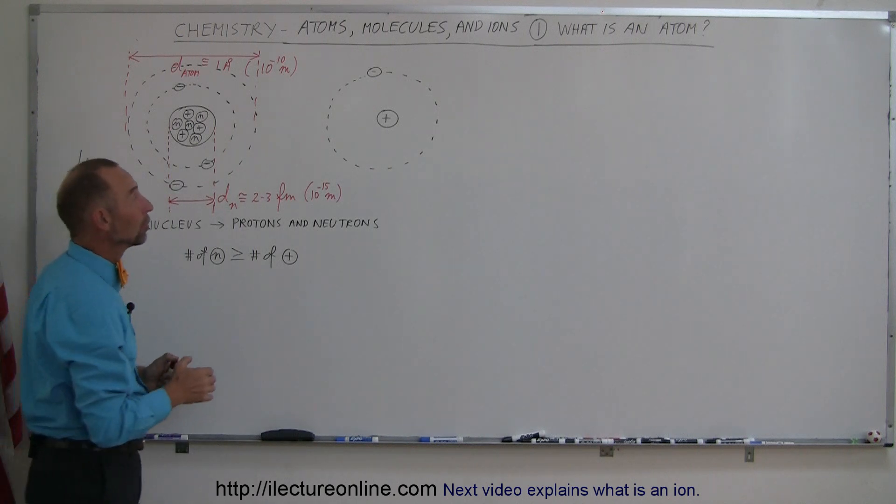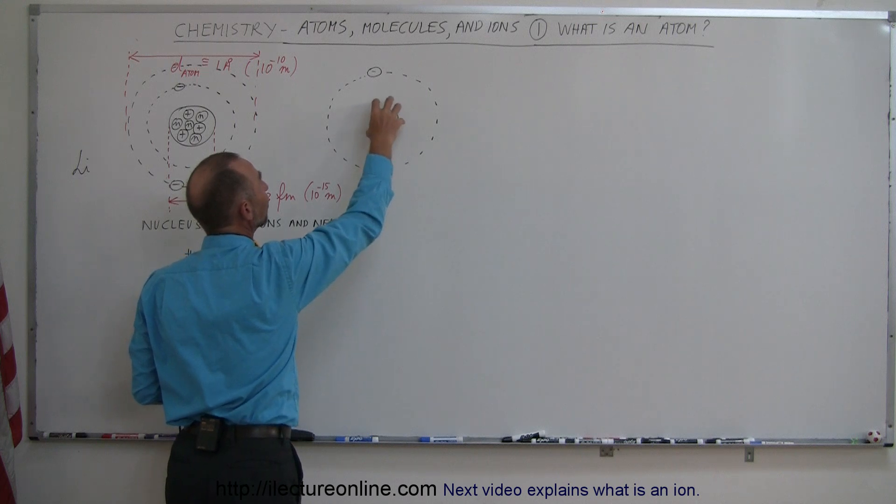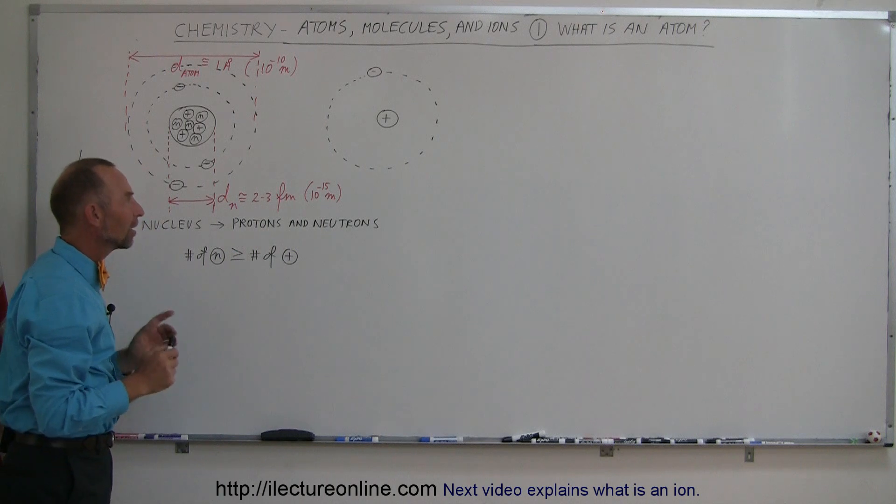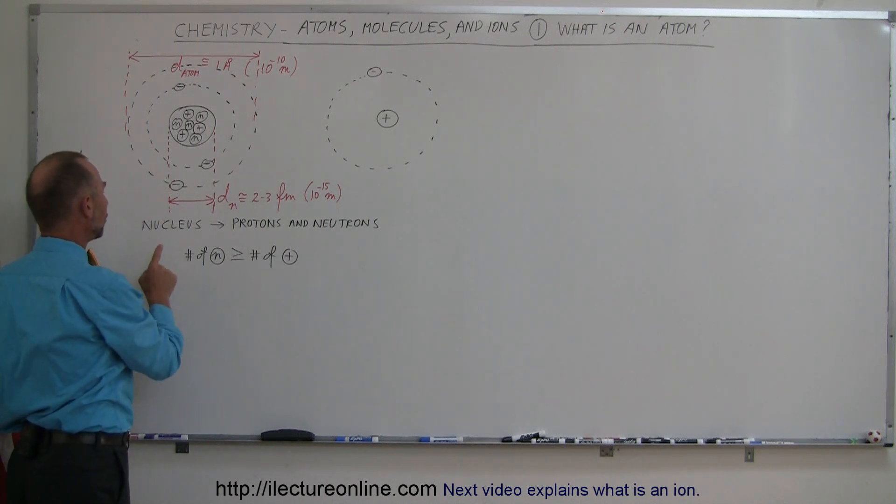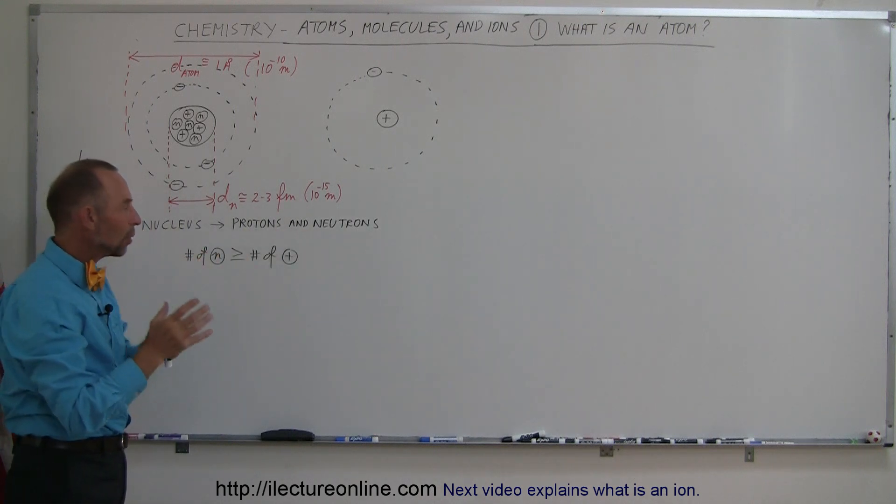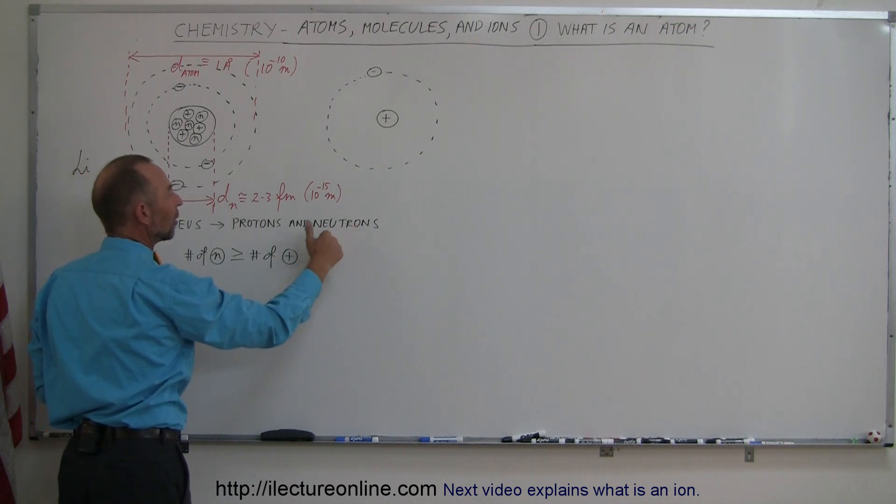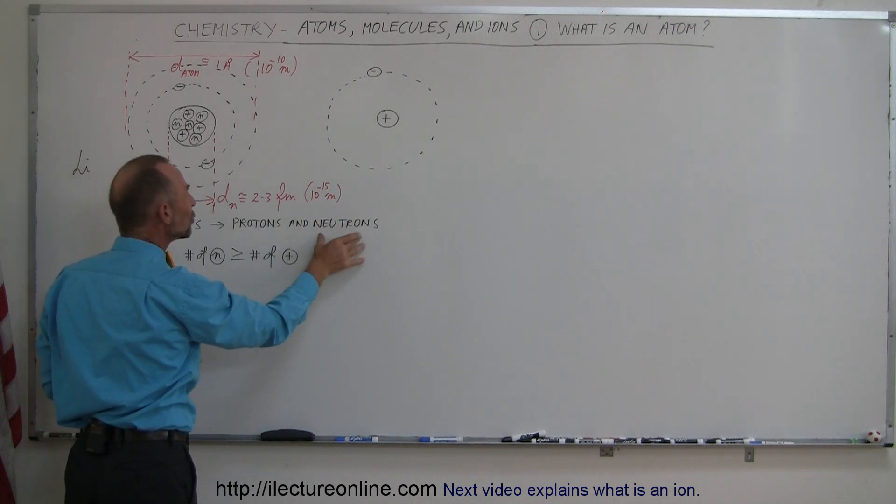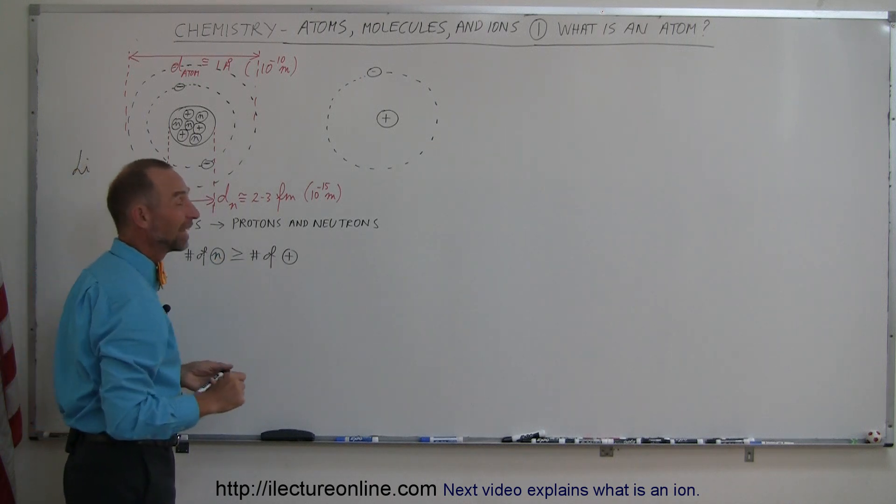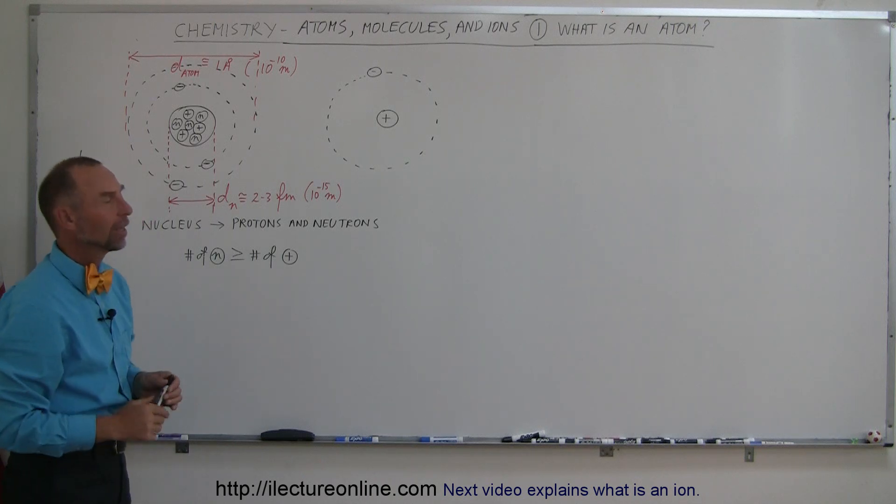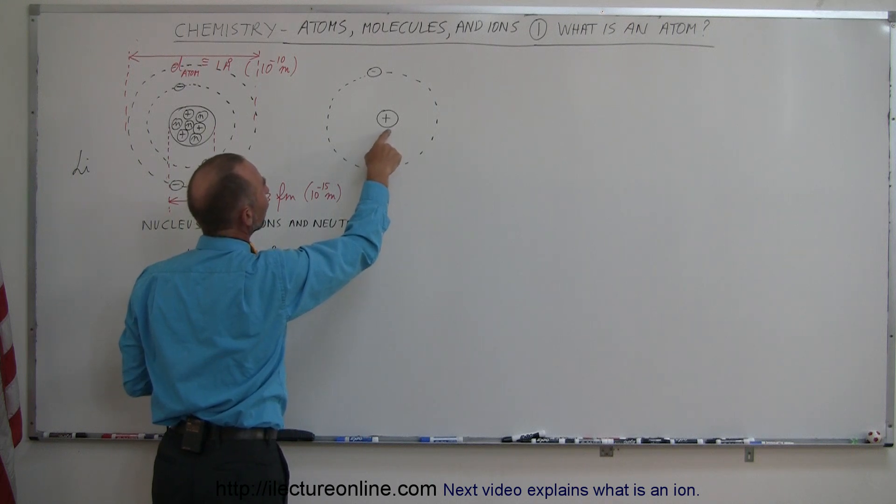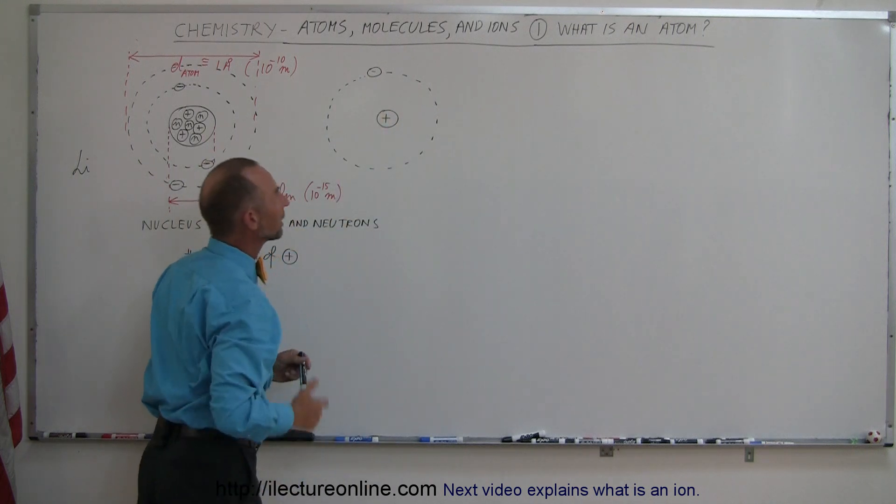The most simple atom in the universe is, of course, hydrogen. Hydrogen has just a single proton as its nucleus and a single electron going around it. Hydrogen is an exception to all the atoms because normally the number of neutrons is greater than or equal to the number of protons. In the case of hydrogen, there's no neutrons in the nucleus unless you have the isotope, deuterium.